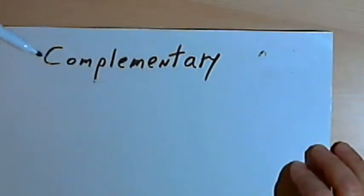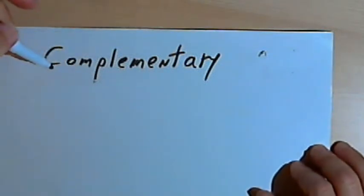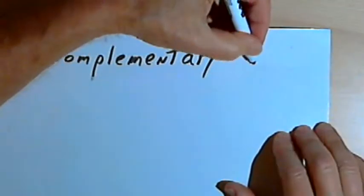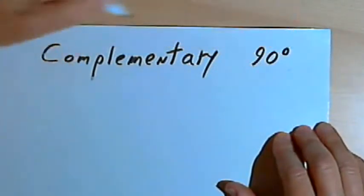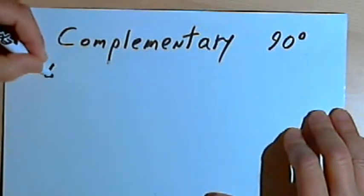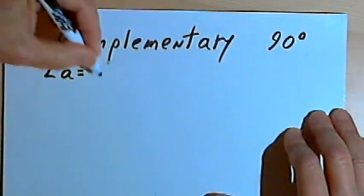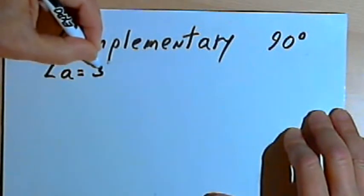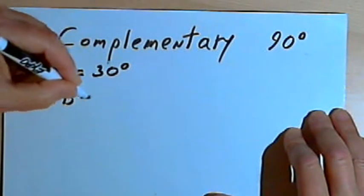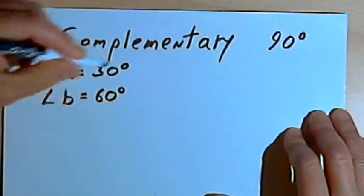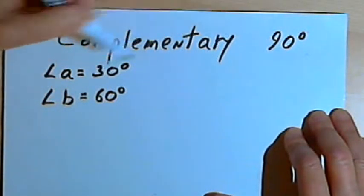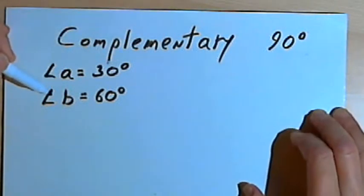If I have two angles and their measures add up to 90 degrees, we can say that those two angles are complementary. So if angle A equals 30 degrees and angle B equals 60 degrees, then since 60 plus 30 is 90, we can call these complementary angles.